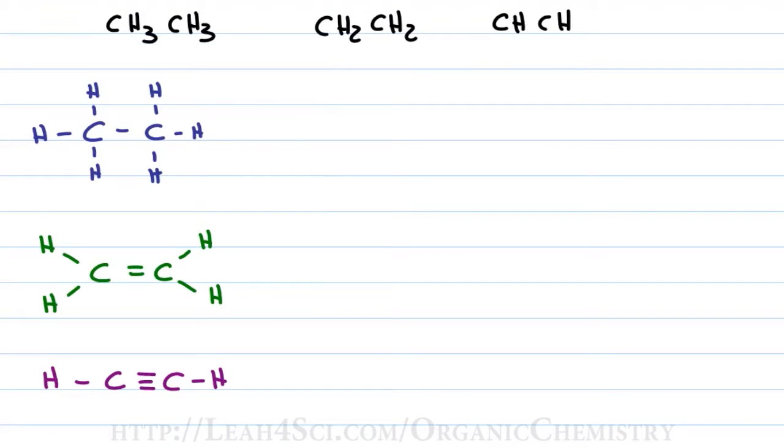Here we have the molecules all drawn out and they just look like carbon hydrogen chains with zero, one, and two pi bonds. How are these molecules acidic?